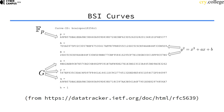The generator X and Y values, the order of the generator, and H — in this case the cofactor of the generator — which is one. The Brainpool and the NIST curves are cofactor-one curves, meaning that the generator actually generates all points on the curve.